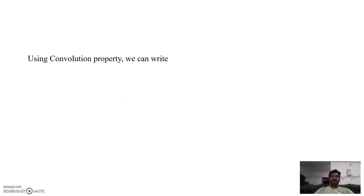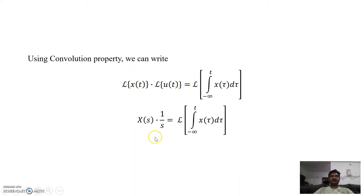But by the convolution property, we can write L{x(t)} · L{u(t)} equals L{integral from minus infinity to t of x(τ) dτ}. Now, the left side function is nothing but X(s) times (1/s).